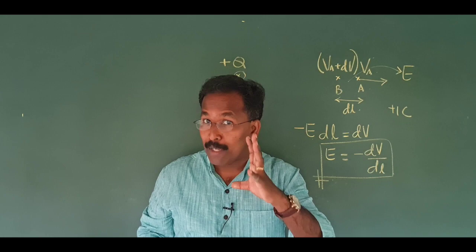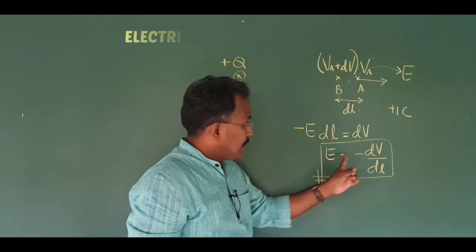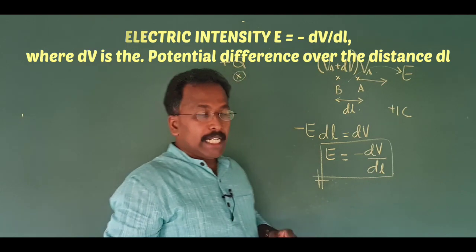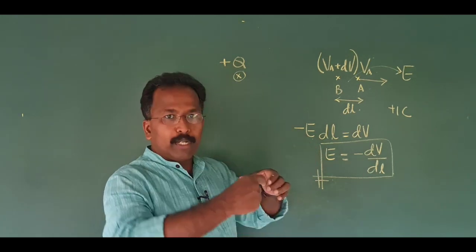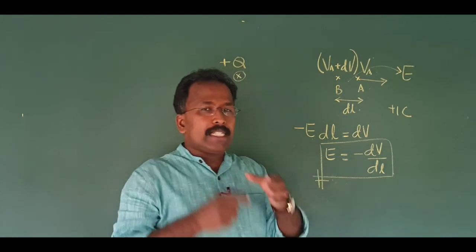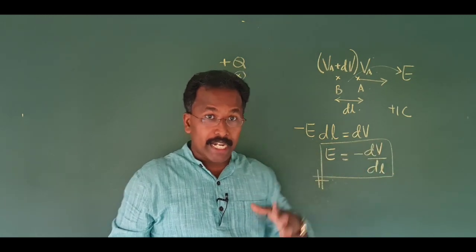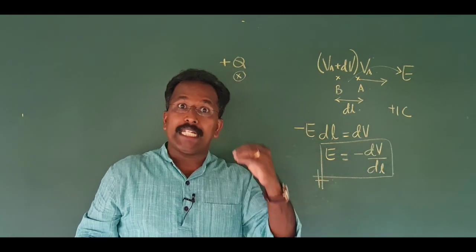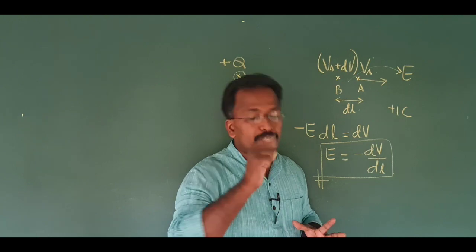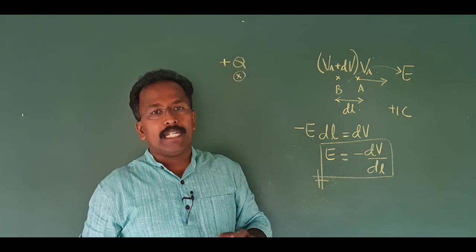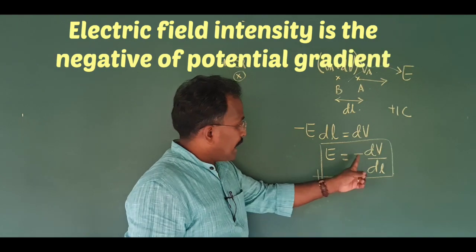We will spend some more time on this so you will definitely understand it. E is equal to minus dV by dL. dV is the potential difference, dL is a very small displacement. dV by dL is called the potential gradient. The relation between electric field and electric potential is: electric field is the negative of potential gradient.